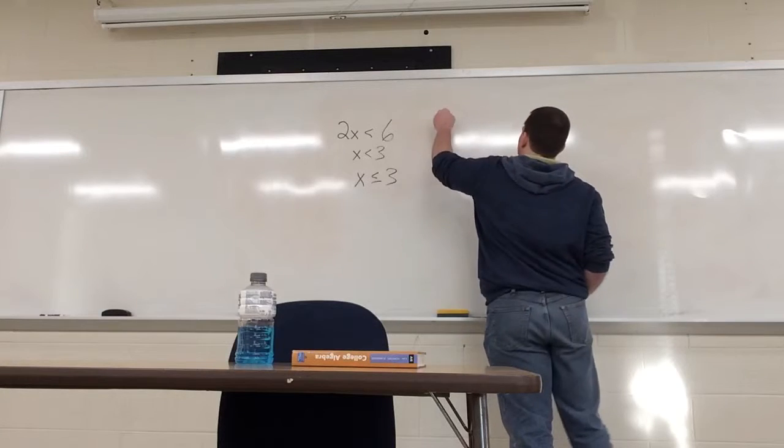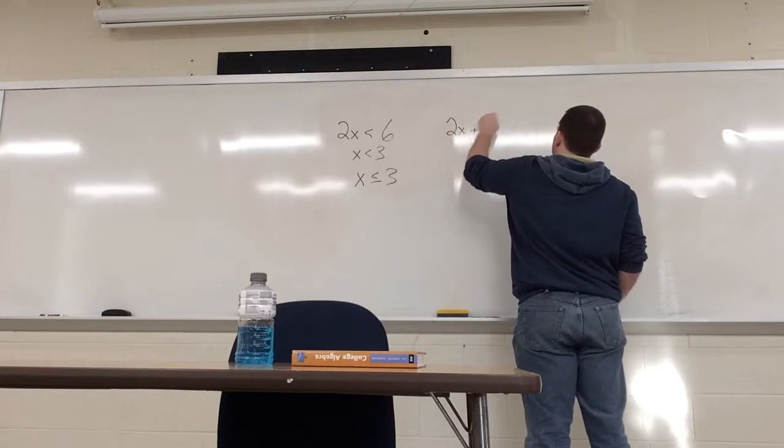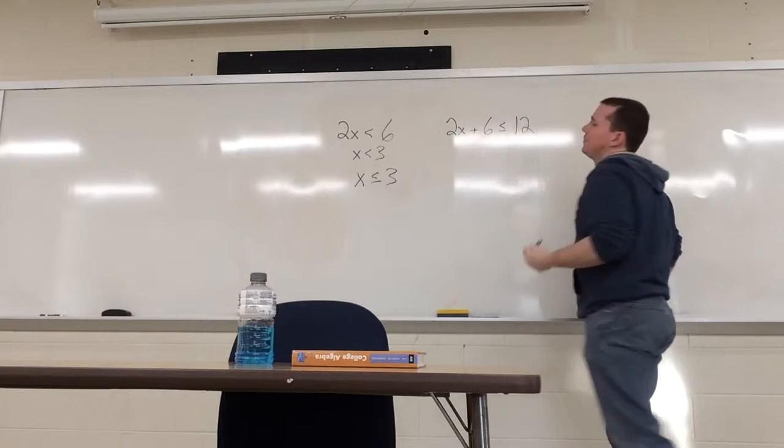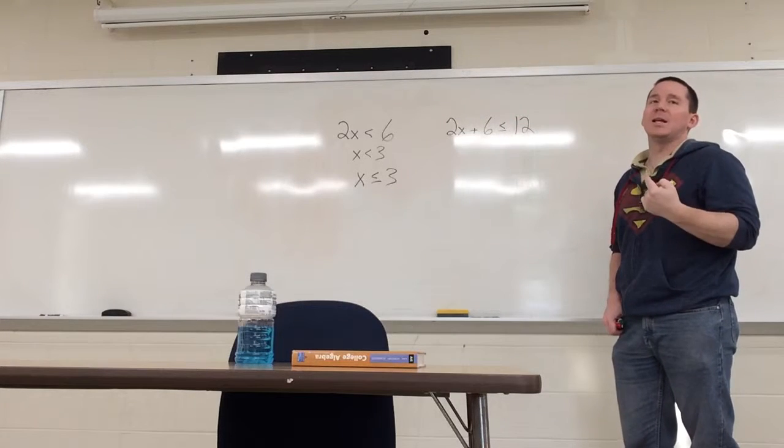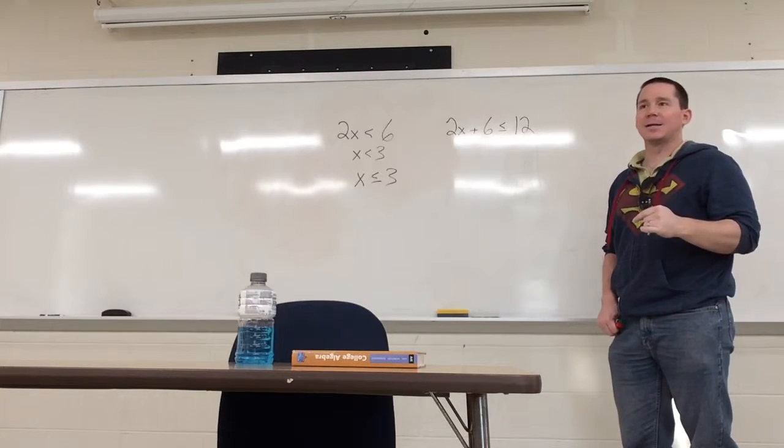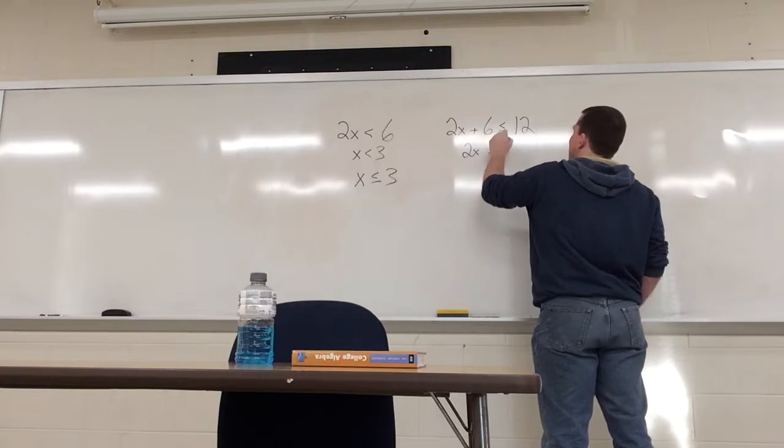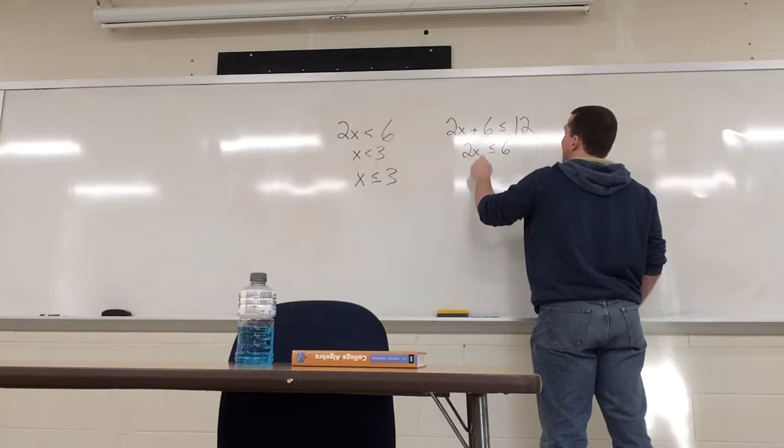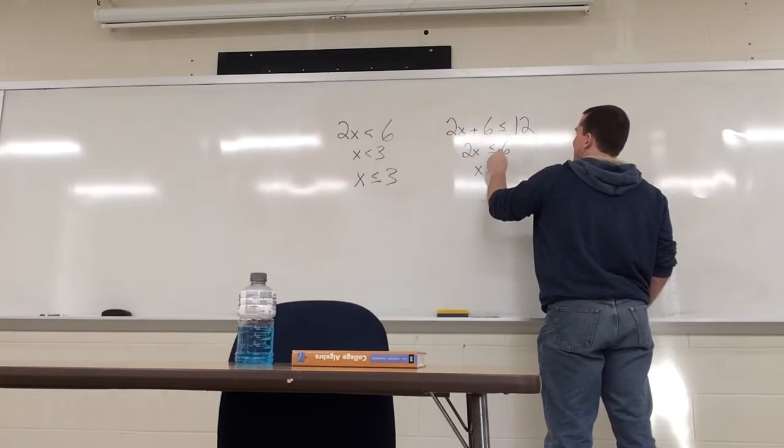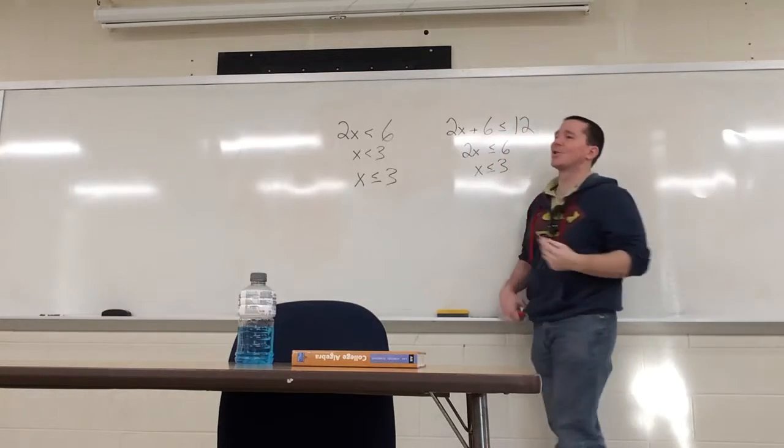So if I have 2x plus 6 is less than or equal to 12, I treat it exactly like an equality, correct? Subtract the 6, divide the 2. You get 2x if you subtract the 6, is less than or equal to 6, divide the 2. x is less than or equal to 6 over 2, which is 3, and you're good.